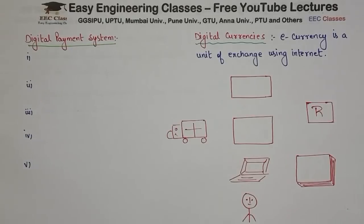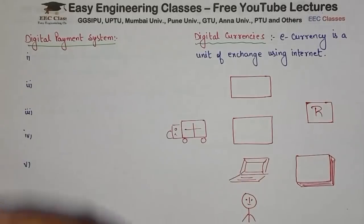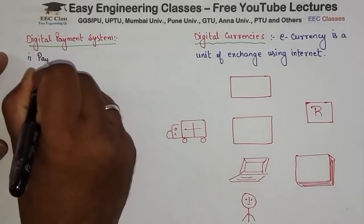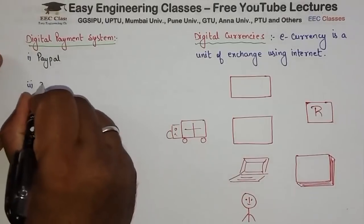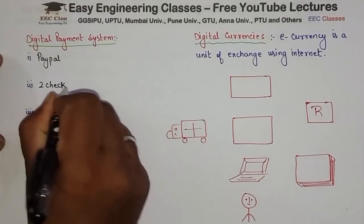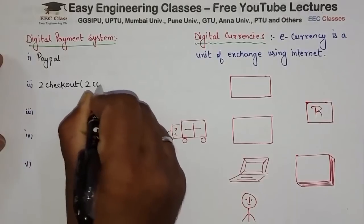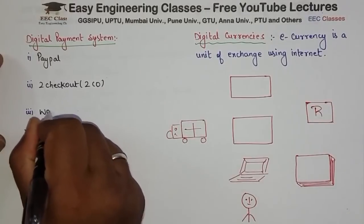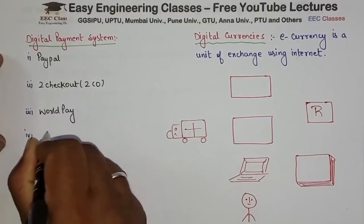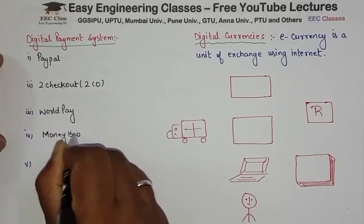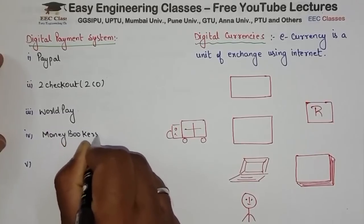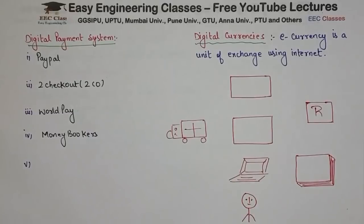Before studying the important terms, let me tell you the major players in digital payment systems. We have PayPal — some of you may have studied, seen, or even used it. Then we have 2Checkout, also called 2CO. After that we have WorldPay, MoneyBookers, and finally E-Gold.